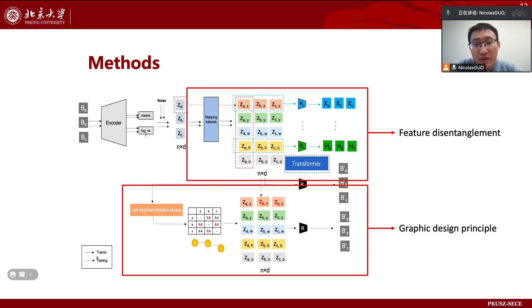Thanks to feature disentanglement, we can easily introduce design principles of graphic design into the model. For example, the alignment principle. We only need to set the x latent vector of the alignment components to be the same, and the components can naturally be left aligned.